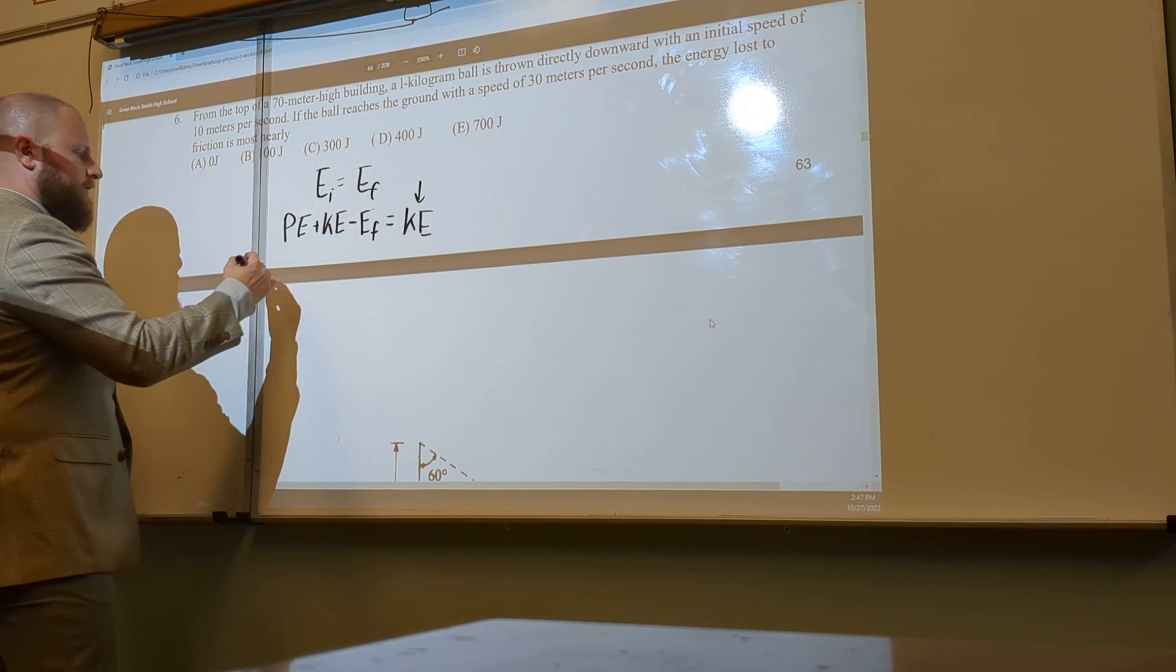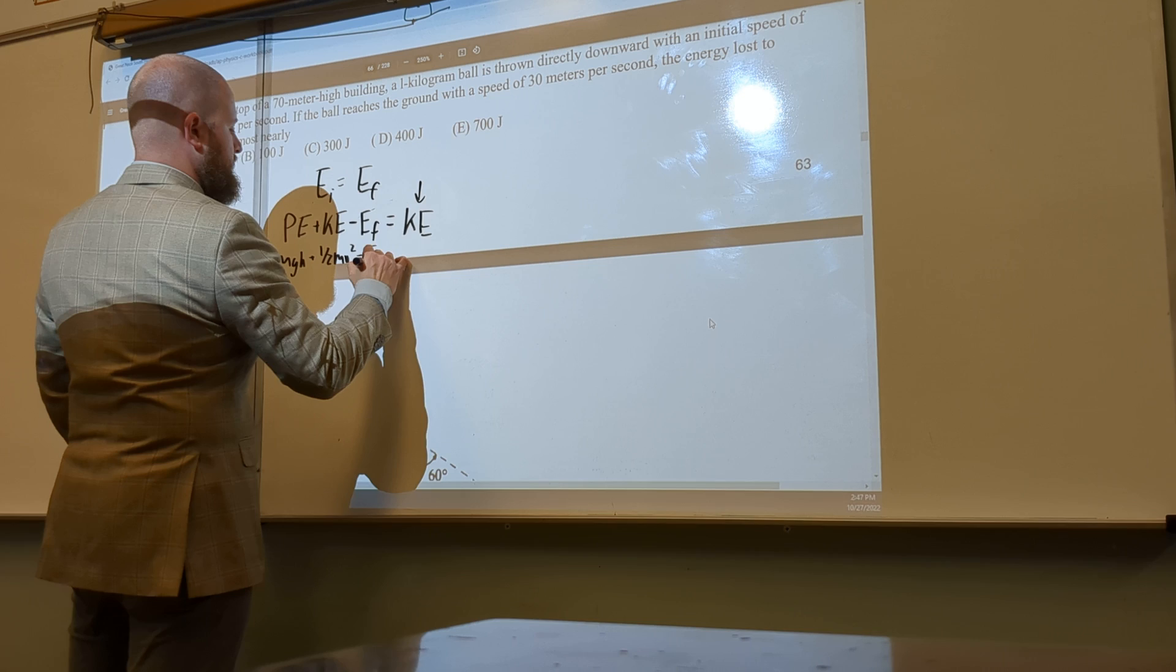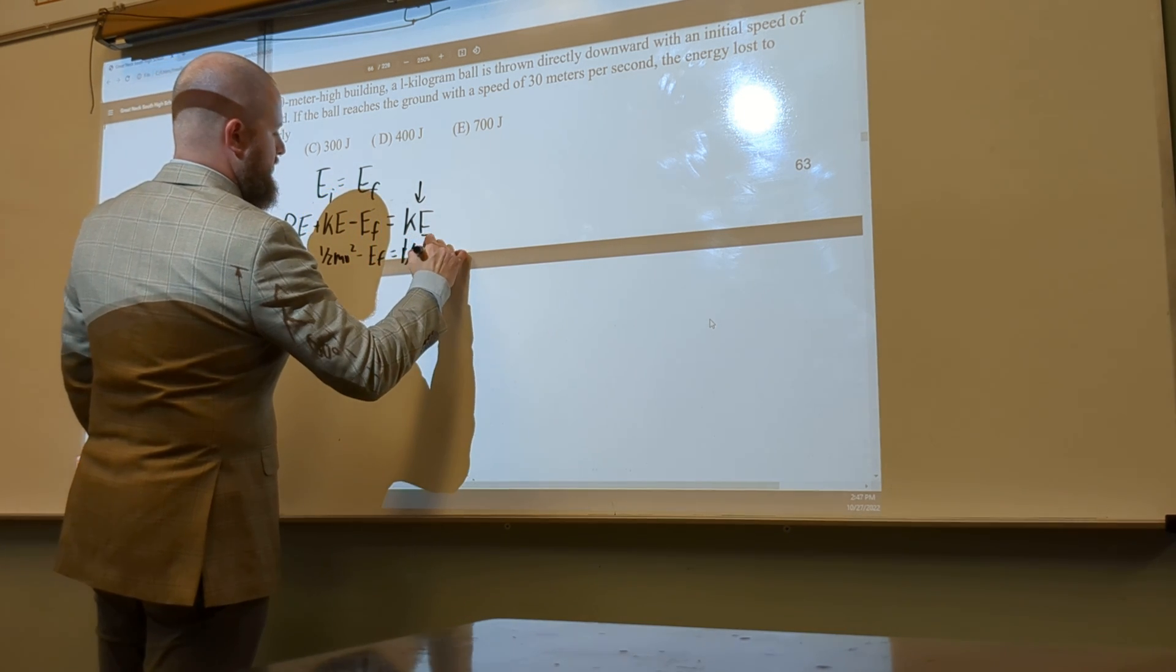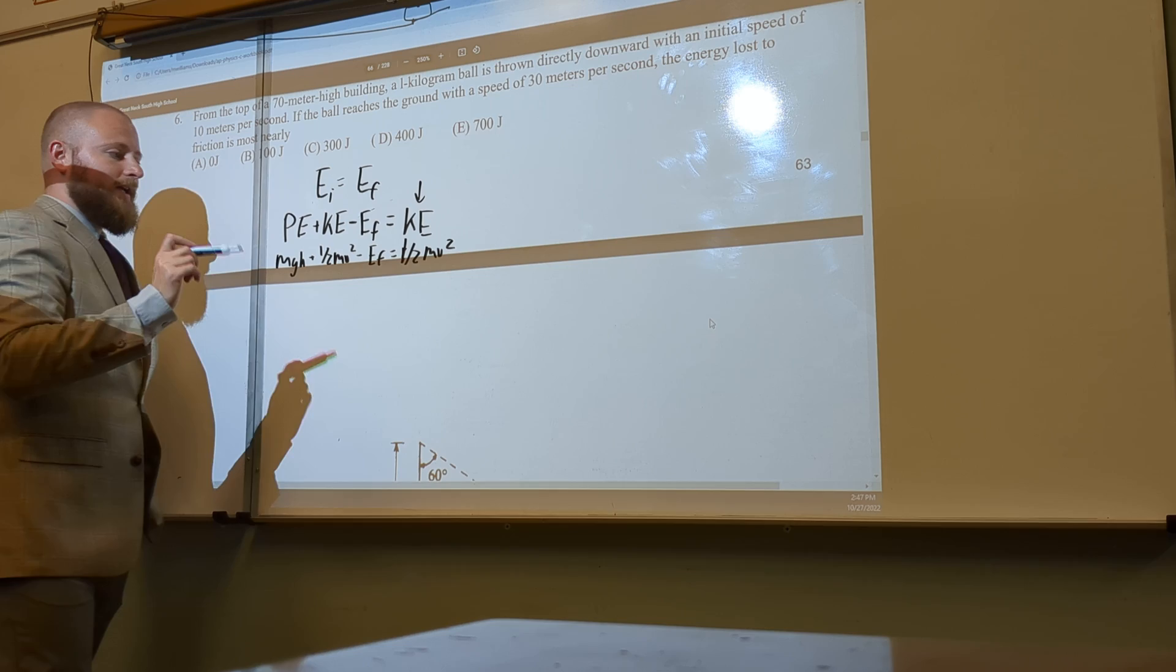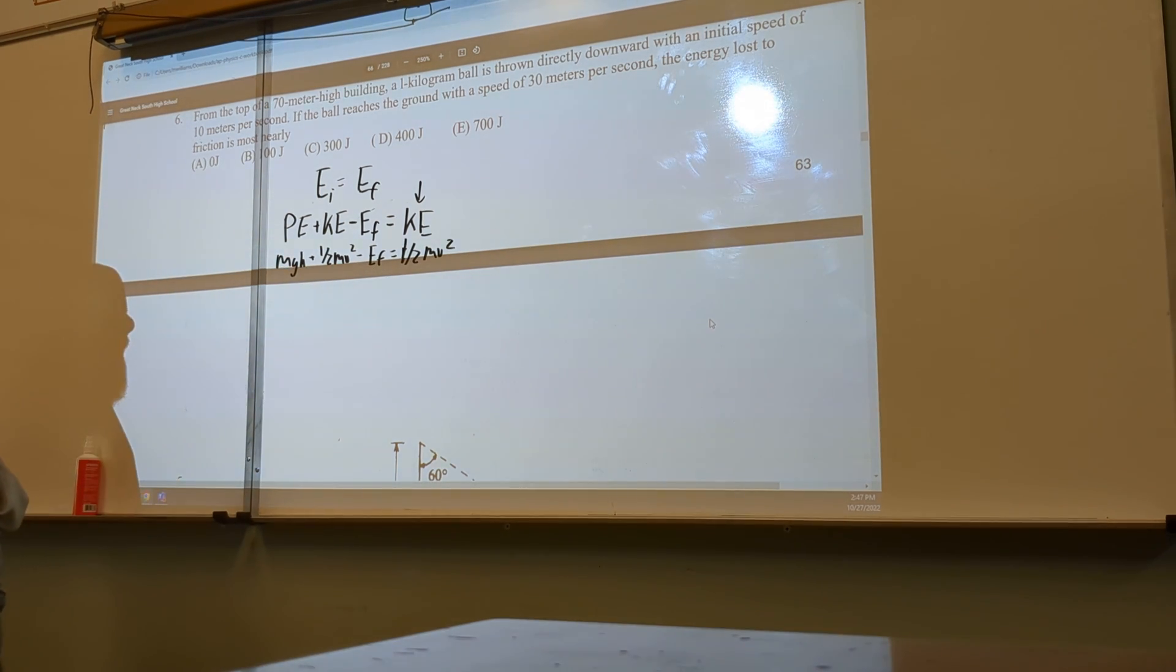Let's write our formulas. mgh plus 1/2 mv squared minus Ef equals 1/2 mv squared. Notice we cannot cancel m because I do not have an m in this term. So let's go ahead and plug in.